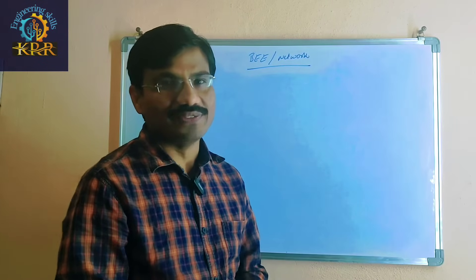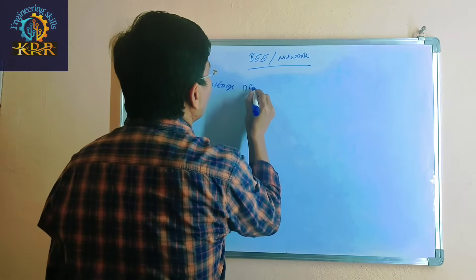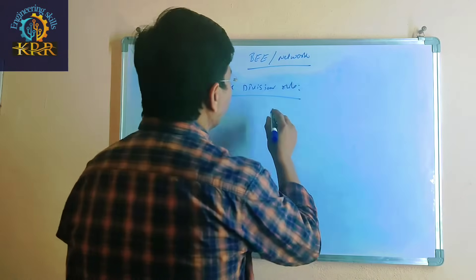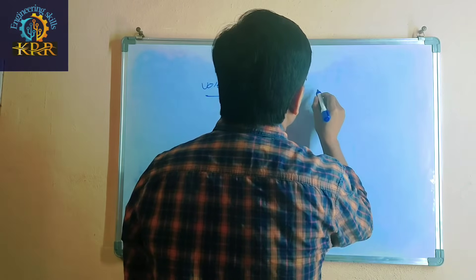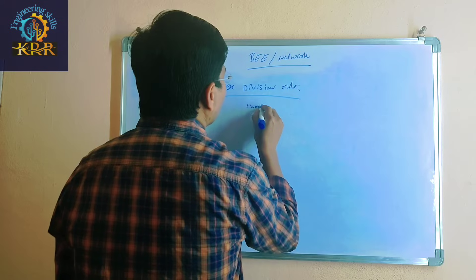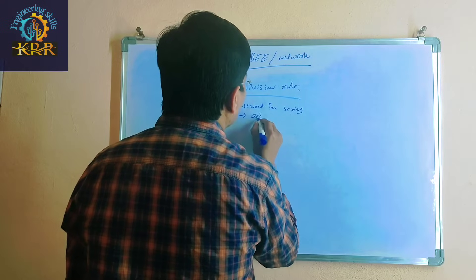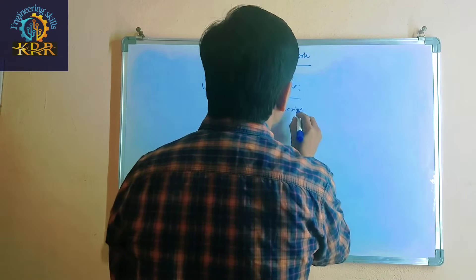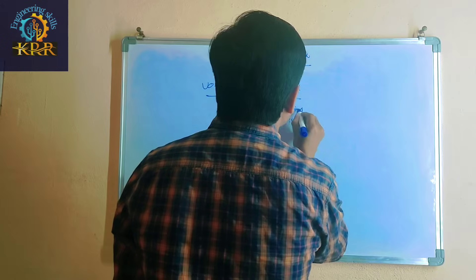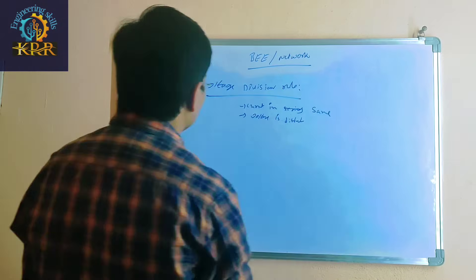We are discussing one more concept: the voltage division rule. In the voltage division rule, the resistors are in series. In a series circuit, the current is the same but the voltage is different.